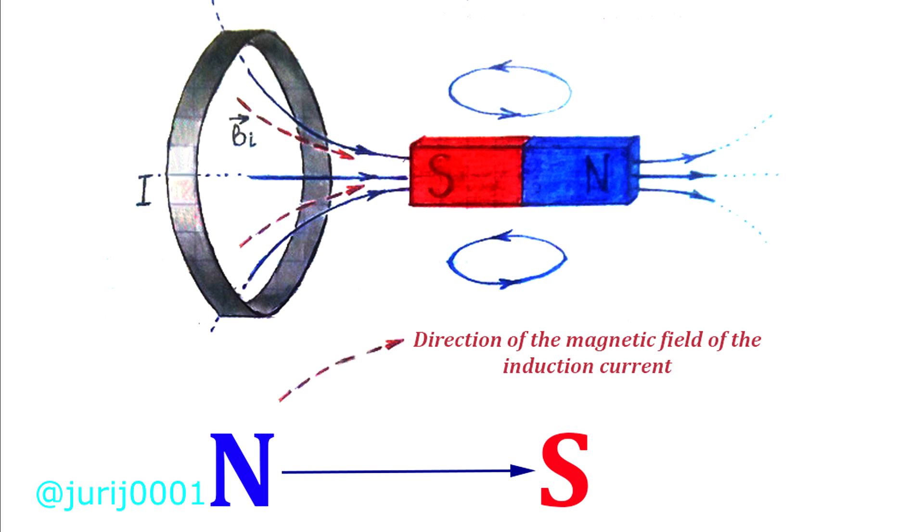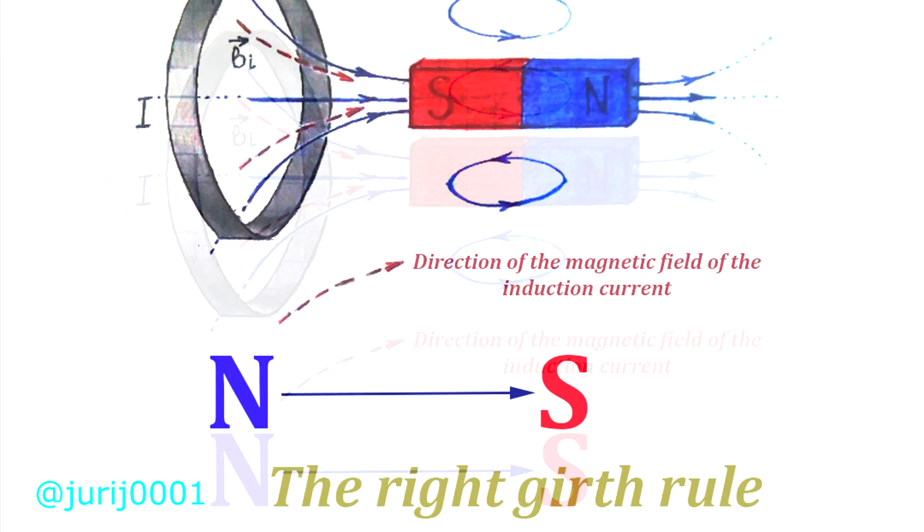To determine the direction of the current in the ring, try to wrap your right hand around the ring so that the thumb bent 90 degrees shows the direction to the north pole. In this case the girth will show the direction of the induction current.